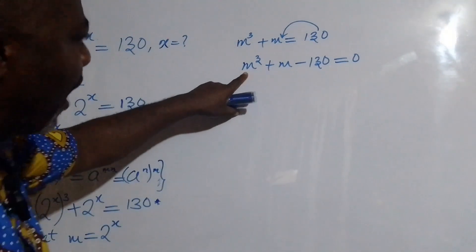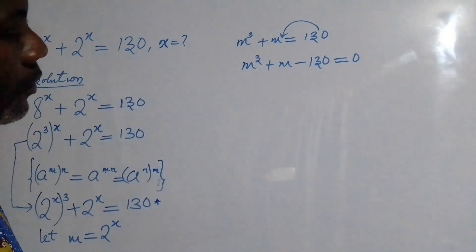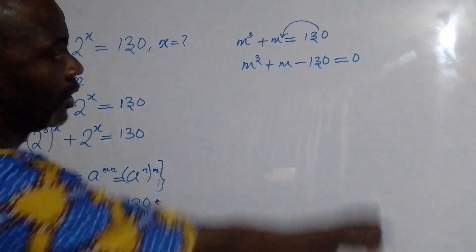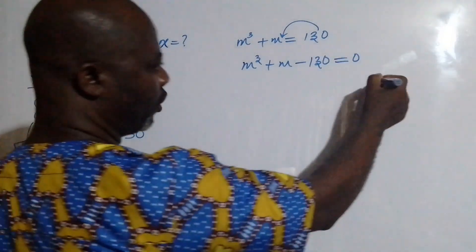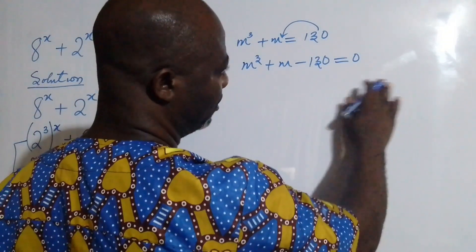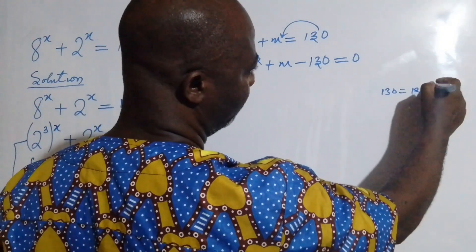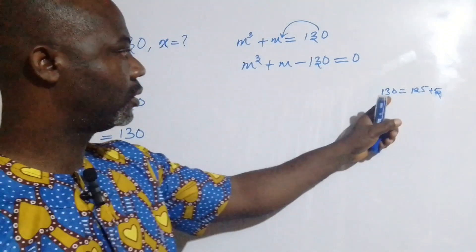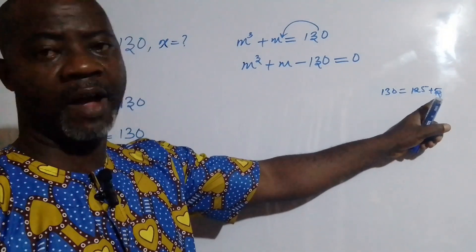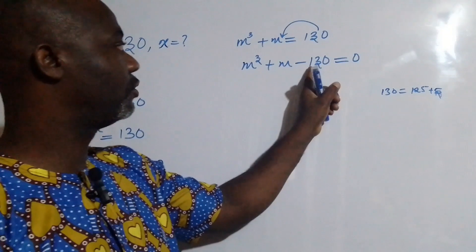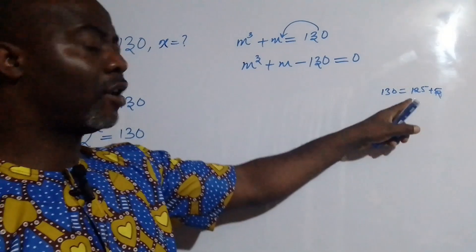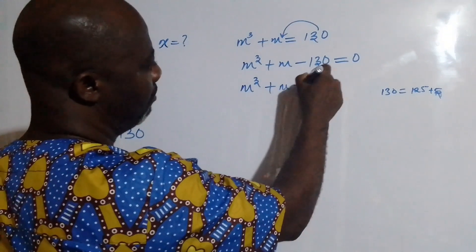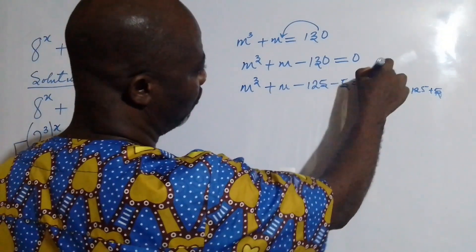Now if we look at this equation, we have a perfect cube situation. I am going to do something now — let's look at 130. We can write 130 as 125 plus 5. So I am going to use 125 plus 5 to replace this, although it is negative, so it becomes minus 125 minus 5. So we have m cubed plus m minus 125 minus 5 equal to 0.